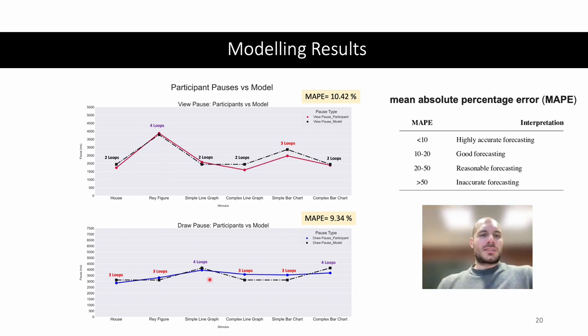Moreover, the synthetic data produced by our model, represented by the black lines in both pictures, are able to predict the view pause duration with a mean absolute percentage error of 10.42% and the draw pause duration with a mean absolute percentage error of 9.34%.